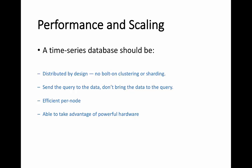For performance and scaling, a time series database should be distributed by design, with no bolt-on clustering or sharding, because it should have distributed characteristics to support large-scale data query tasks. It should also send the query to the data instead of bringing the data to the query — meaning automatic query distribution. Queries may touch many gigabytes or terabytes of data, so moving data across the network is not scalable. It should be efficient per node, capable of running at large scale without requiring thousands of servers. A time series database is also able to take advantage of powerful hardware like flash storage, big RAMs, and multi-core CPUs.